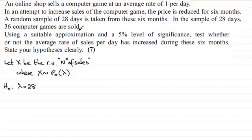We're told that 36 computer games are sold. Because this is more than our mean, we're wanting to test to see whether or not the number of sales has increased. In other words, the alternative hypothesis is that the mean has increased, so it's greater than 28.